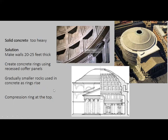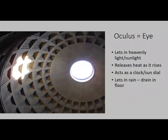At the very top there's a compression ring that presses down and holds all the other rings in place. You can see a circle at the top — that's called an oculus, meaning 'eye.' Part of the reason for the circle is that if the compression ring were solid it would be too heavy, so the circle is molded out of it to reduce weight.